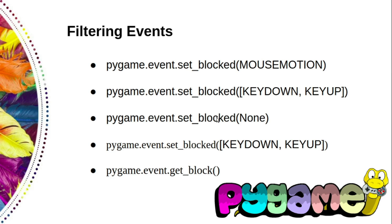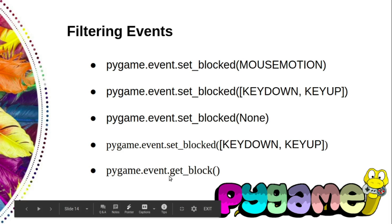The opposite of set_block is set_allowed, which selects the events that should be allowed. It also takes a single event type or a list of event types. But if you pass in the value None, it effectively blocks all events. You can ask pygame if an event is currently blocked with pygame.event.get_blocked, which takes a single event type and returns whether it is blocked or not.